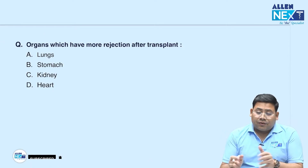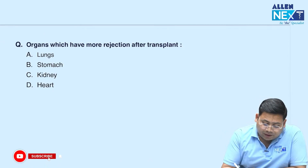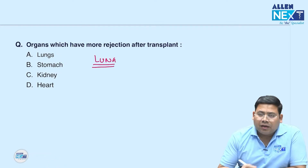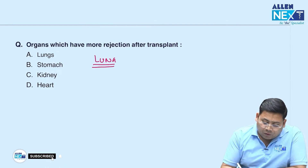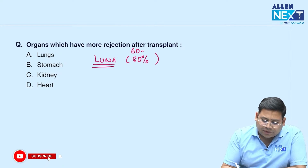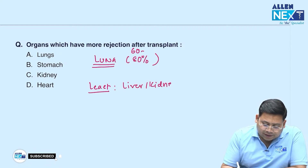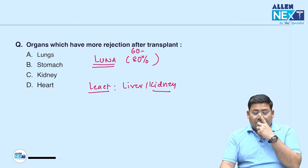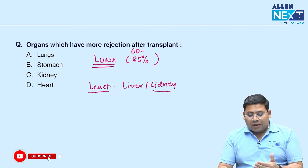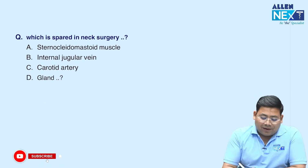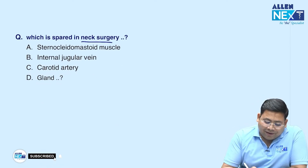Next question: which organ has the highest rate of transplant rejection? The maximum rejection rate is for the lung — almost 60 to 80 percent rejection rate. The least rejection is for the liver and kidneys. The highest is for the lungs. So the order is: lungs, then kidneys, then liver.